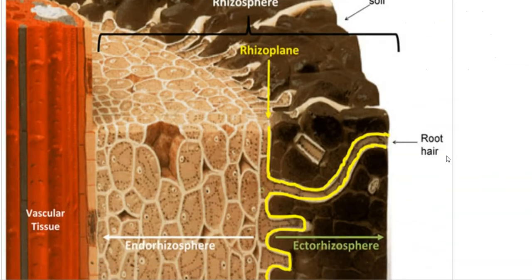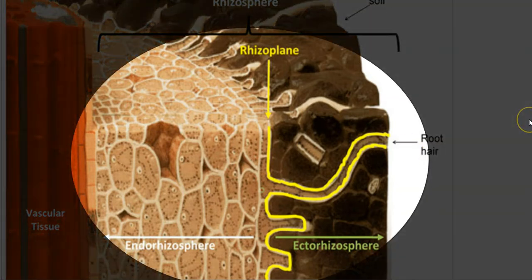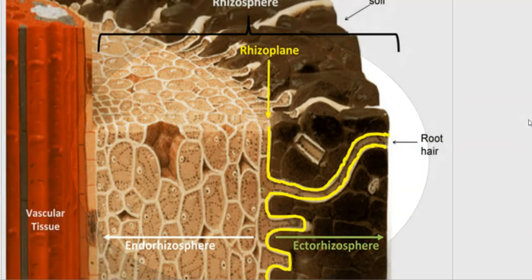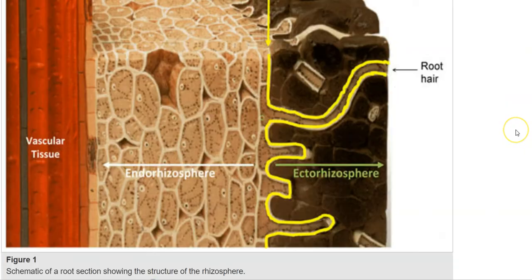The third region is the ectorhizosphere, which refers to the outermost zone that extends from the rhizoplane out to the bulk soil. All these things are clearly visible in the diagram. The rhizosphere comprises three different zones: the outermost ectorhizosphere, the inner rhizoplane, and the innermost endorhizosphere which includes cortex and endodermis cells with apoplast spaces.